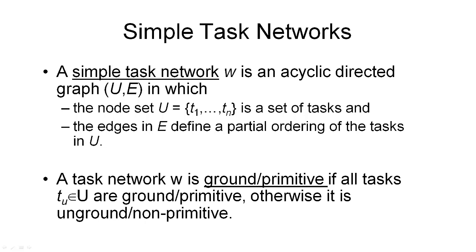The next thing we can do is to group the tasks we have just defined into simple task networks. Such a task network is really just an acyclic directed graph. This graph consists of some nodes denoted by the set U and some edges given by the set E. The nodes in a task network are simply a set of tasks t1 through tn, where each element is a task — a syntactic expression of the form given a task symbol and some arguments, not just a task symbol. The edges in the task network simply define a partial ordering of those tasks in the set U.